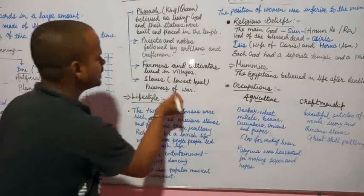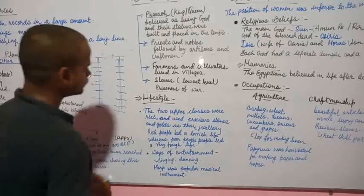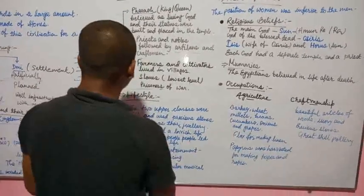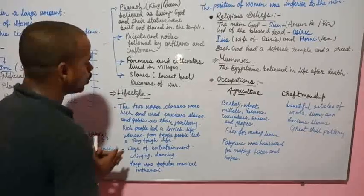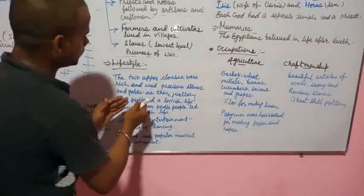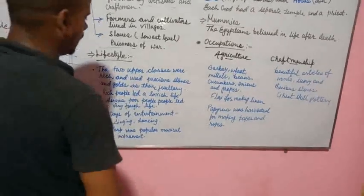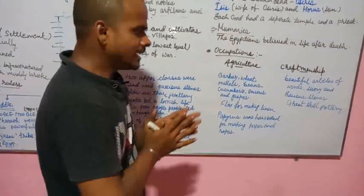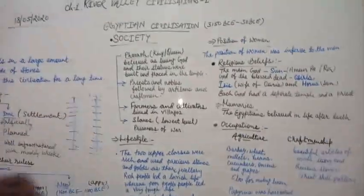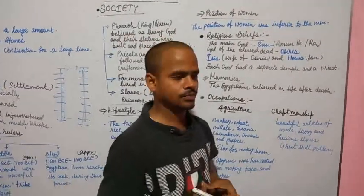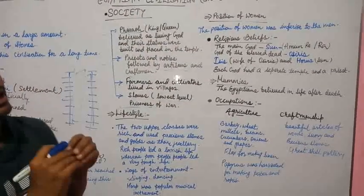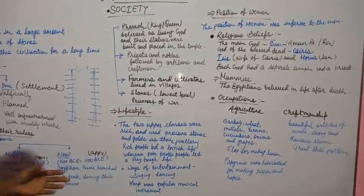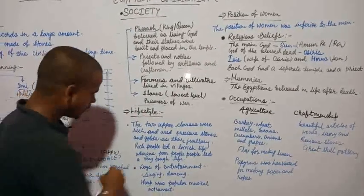Lifestyle. The two upper classes were rich and used precious stones and gold as their jewelry. Rich people led a lavish life and were very happy, whereas poor people lived a very tough life.